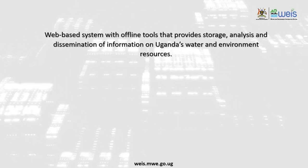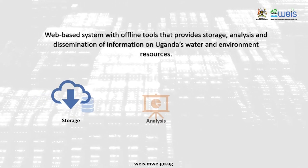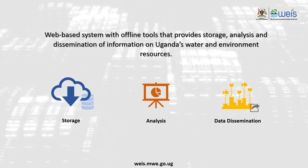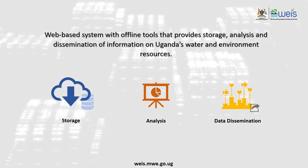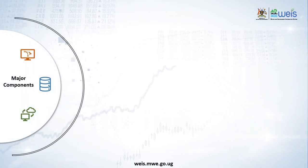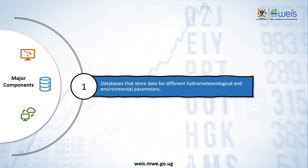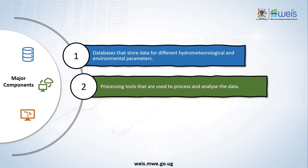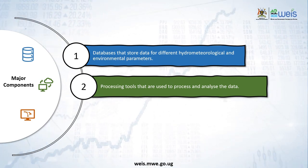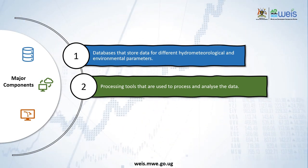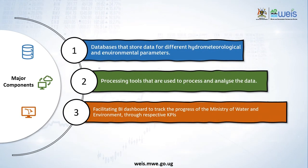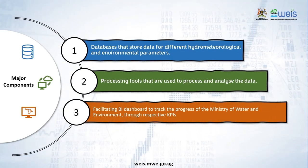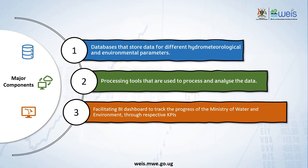WEEZ is a web-based system with the help of offline tools that provides storage, analysis, and dissemination of information on Uganda's water and environment resources. It is made up of three major components: one, databases that store data for different hydrometeorological and environmental parameters; two, processing tools that are used to process and analyze the data; three, a facilitating BI dashboard to track the progress of the Ministry of Water and Environment through respective KPIs.